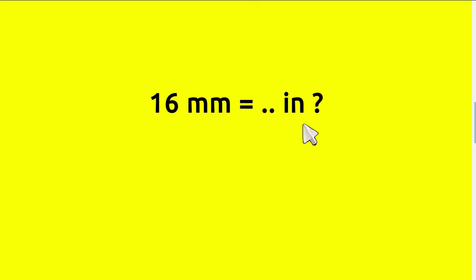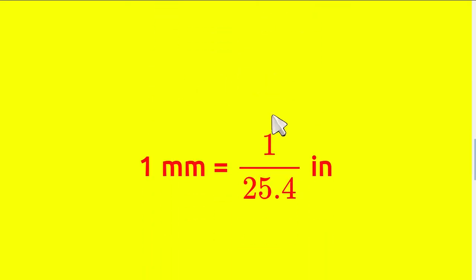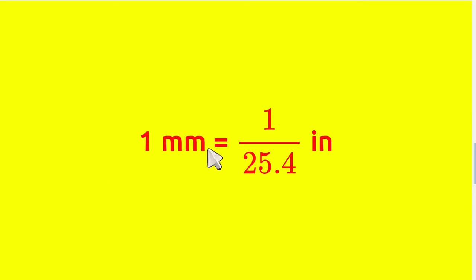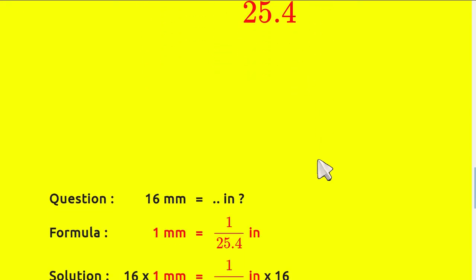Okay, tonight we are going to convert millimeters to inches and the question is: 16 millimeters equals how many inches? In order to solve that problem we need to know the formula first, so the formula of conversion between millimeters to inches is 1 millimeter equals 1 over 25.4 inches.